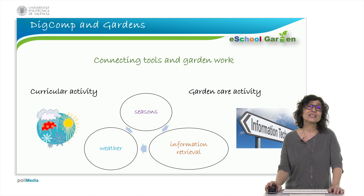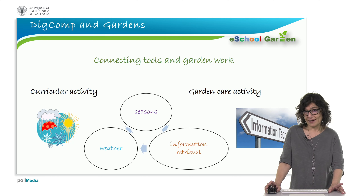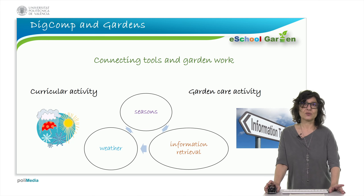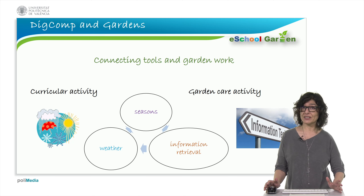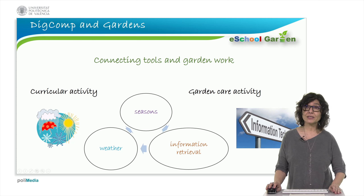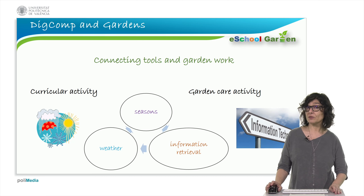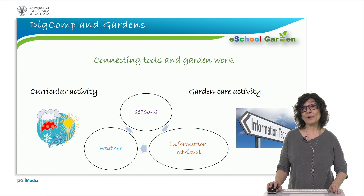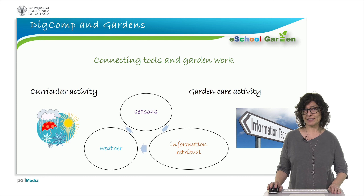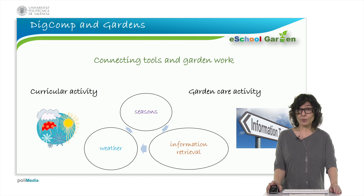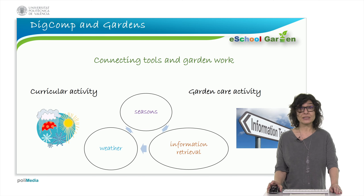Secondly, activities must be directly related to garden care. These activities will take place in parallel with curricular activity, but also take into account seasons, weather and other environmental conditions. Digital tasks are based on the retrieval of information about gardening, for example. In this way, cooperative tasks aim to produce reliable and useful information for garden planning and care, recycling and agro-instrumentation.